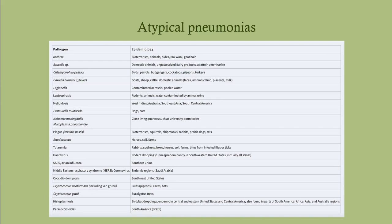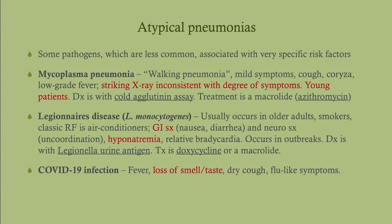There are many causes of atypical pneumonia. Mycoplasma pneumonia typically occurs in a young person with mild, protracted symptoms. You get a chest x-ray and it's striking — very diffuse interstitial markings, totally out of proportion to the symptoms. These patients often say they just have a little cough and maybe a low-grade fever. Diagnosis is with a cold agglutinin assay, but you can often diagnose clinically with the chest x-ray and presentation. Treatment is a macrolide, usually azithromycin.